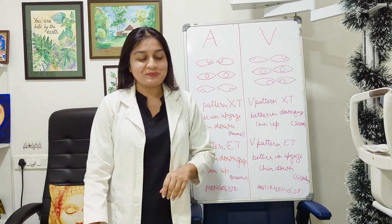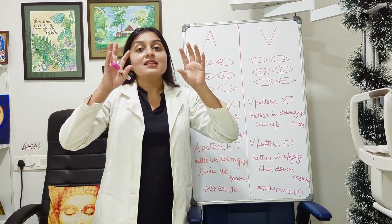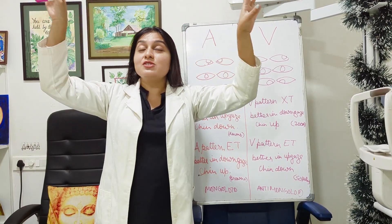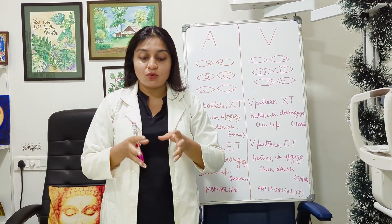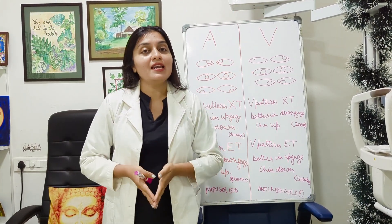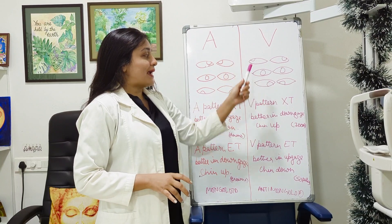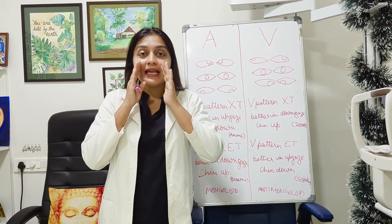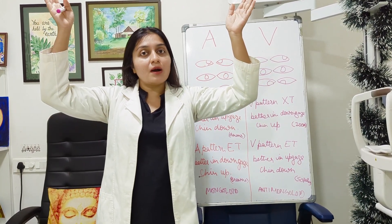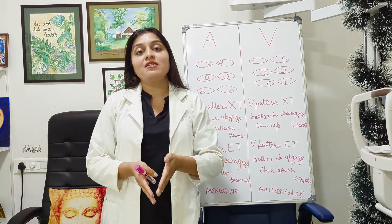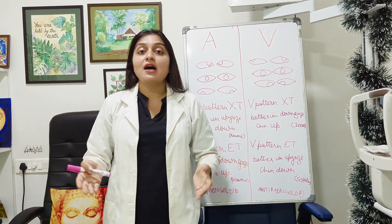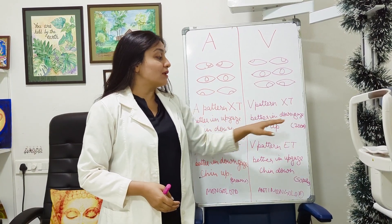Now let's go into V pattern. In V pattern, the squint is more when you look up — the eyes go out when you look up and the eyes go in when you look down, just like a V. Now V pattern exotropia: in primary gaze the eyes are out, they get worse when you look up, and they get better when you look down. Because it is better when you look down, you have a chin up position. So V pattern exotropia is better in down gaze and they have a chin up position, quite commonly seen in inferior oblique over action.